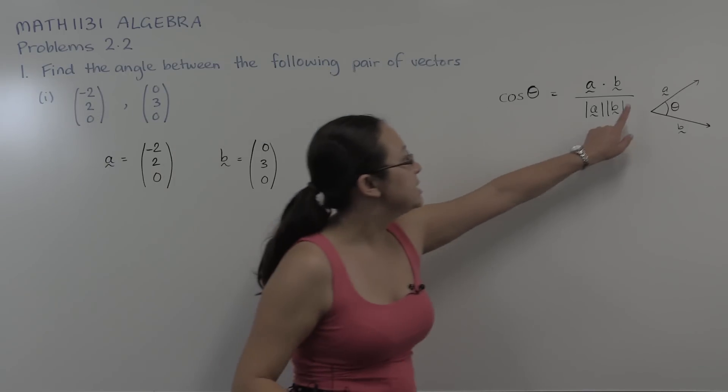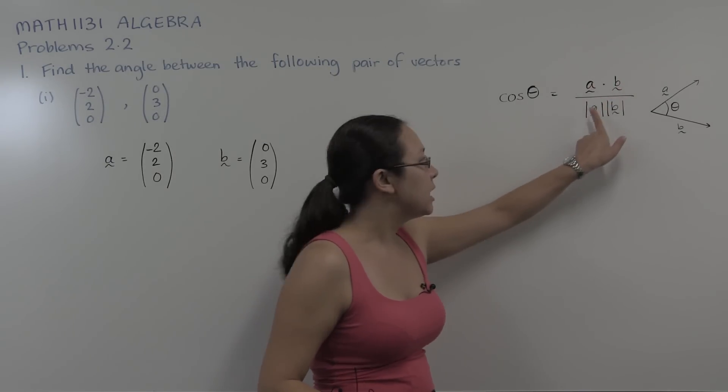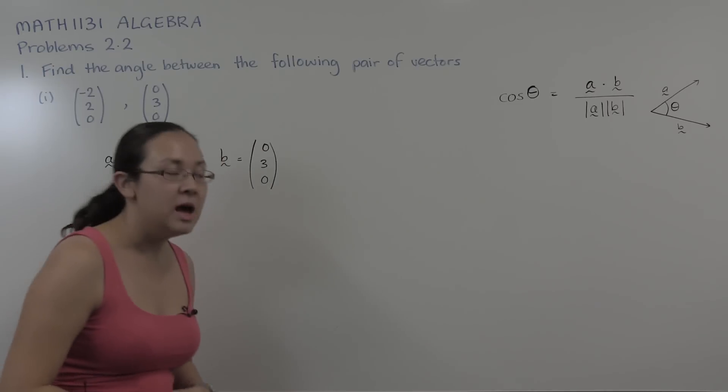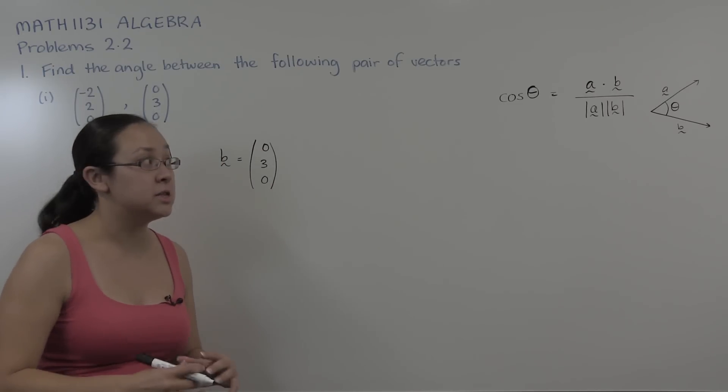So all we need to do is calculate the dot product, calculate the length of each of them, and substitute those things into our formula.